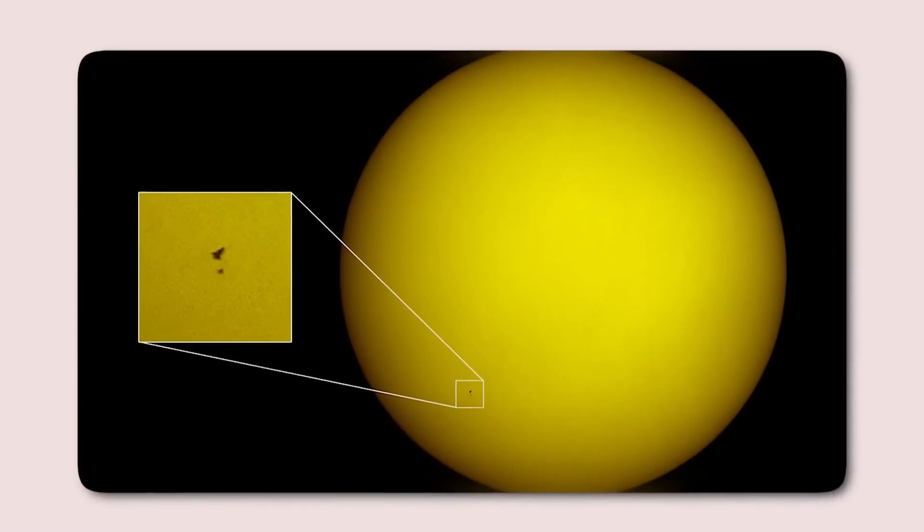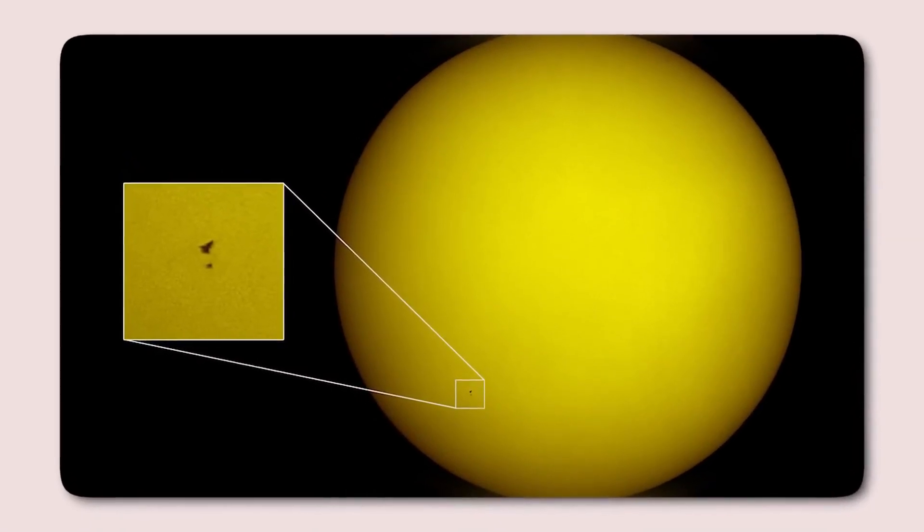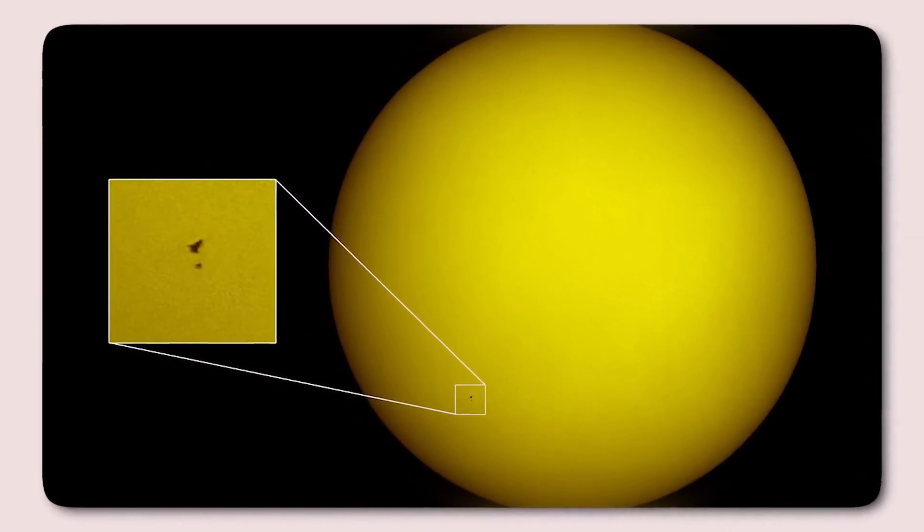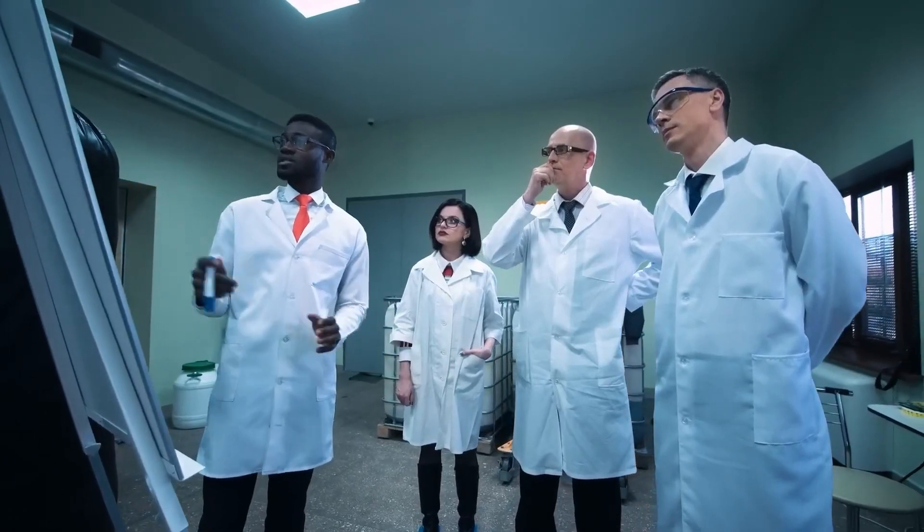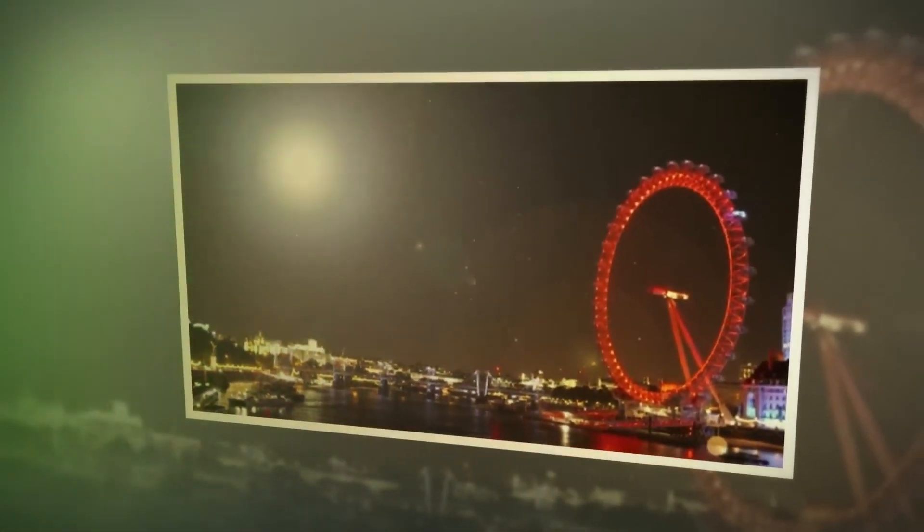A supernova is one of nature's most powerful explosions. Depending on their age and evolutionary stage, stars emit light of varying wavelengths and temperatures, resulting in a spectrum of colors from the blue of the youngest stars to the red of the oldest.